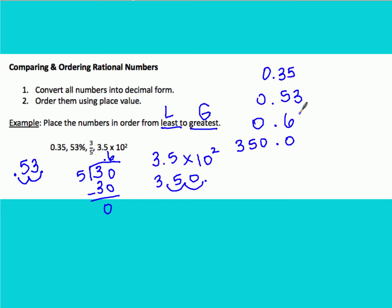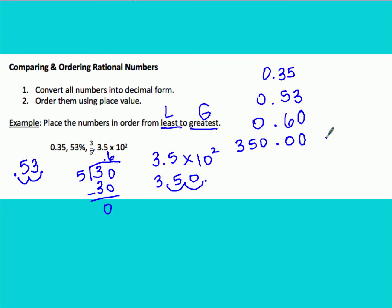Remember, to help you compare, you can always add zeros to the right of any decimal at the end. First, look at the ones place — the furthest to the left place value. In this first column, we have 300 and 350 right here. This is very clearly our largest number, so I'm going to write 'greatest' next to it.